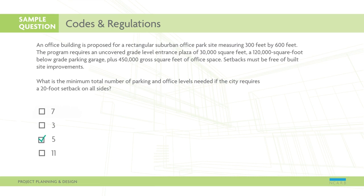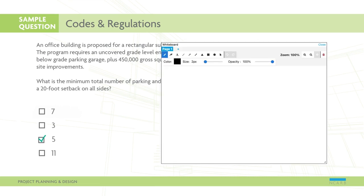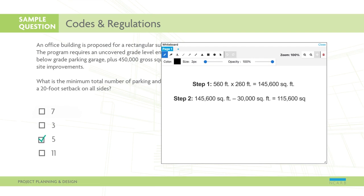The correct response is 5. You'll first need to calculate the buildable areas. The below-grade buildable area equals the surface area of the site reduced by the required setbacks. The above-grade buildable area equals the below-grade area reduced by the required plaza. Next, you'll calculate the number of levels required to accommodate the office space, found by dividing the total office area by the below-grade buildable area.